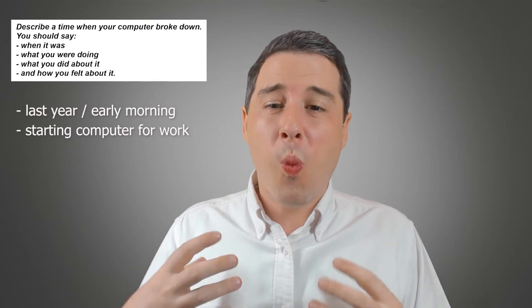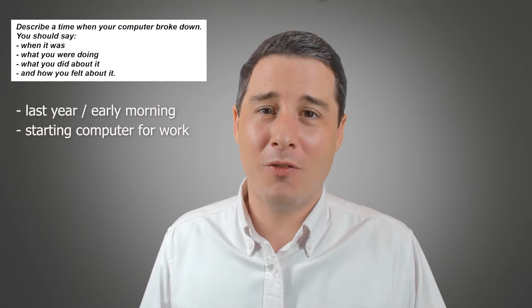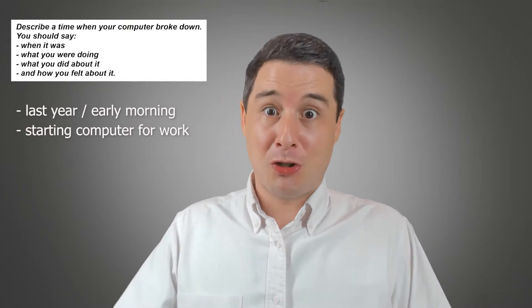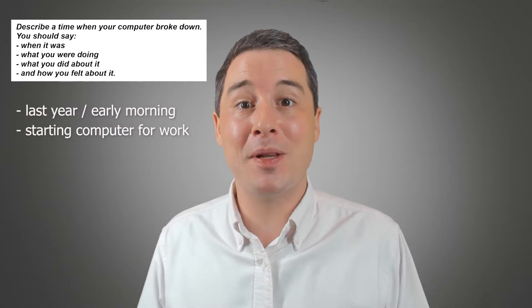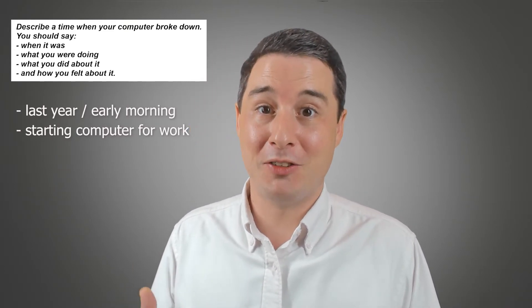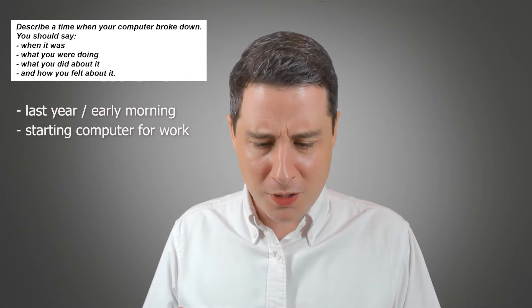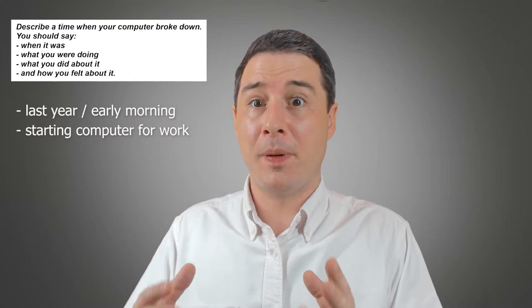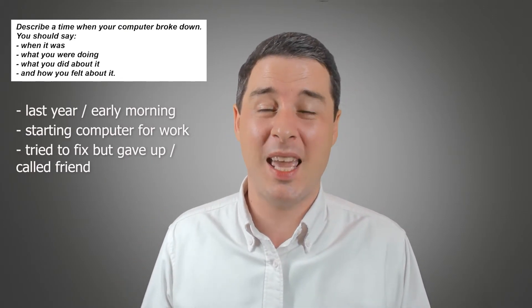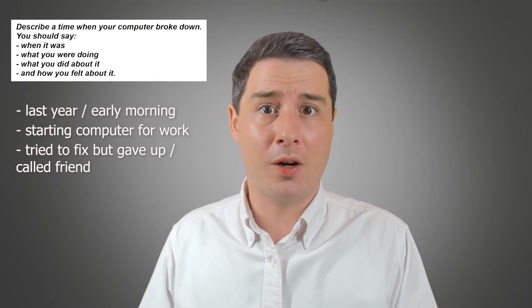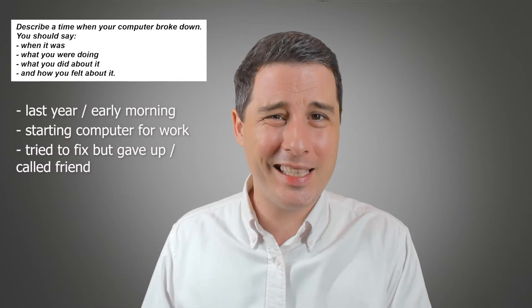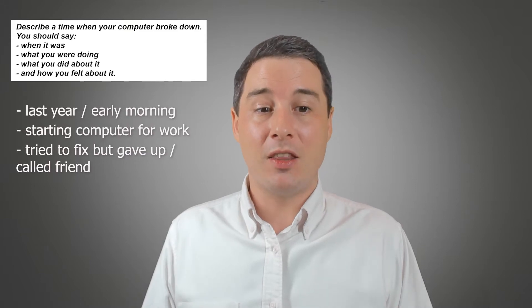Then the third cue: what you did about it. I've got to explain a bit about what I did when the computer broke down. Basically, I tried to fix it, but in the end I had to give up because it wasn't working. After that, I decided to call a friend to help me fix it. So the main idea is 'tried to fix but gave up,' and maybe also the fact that I called a friend — writing that down so I don't forget.